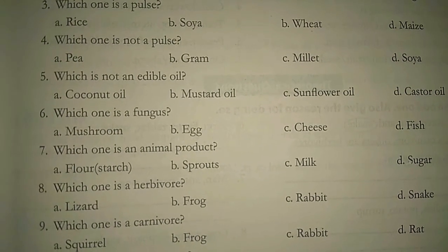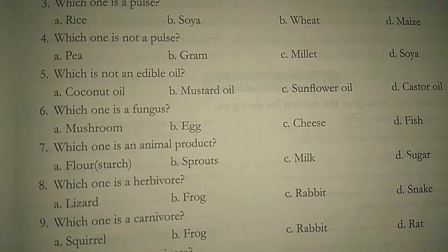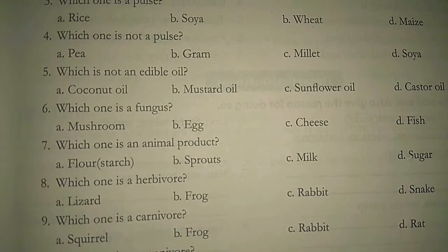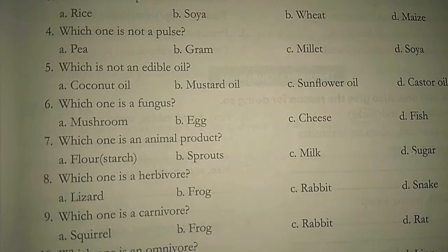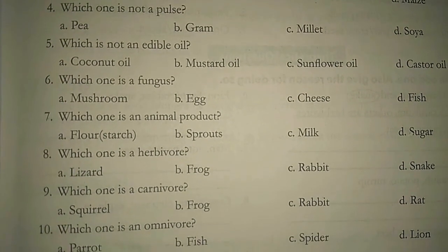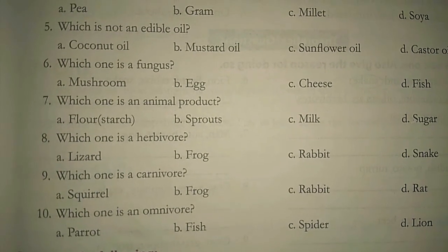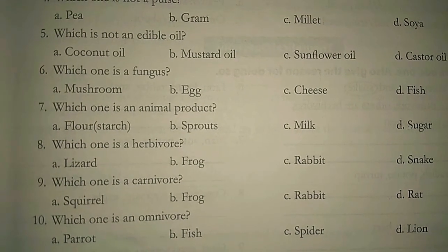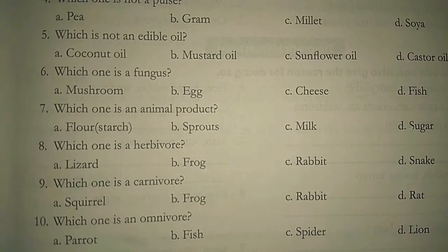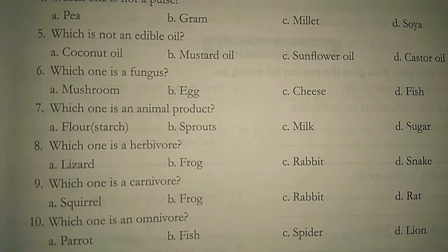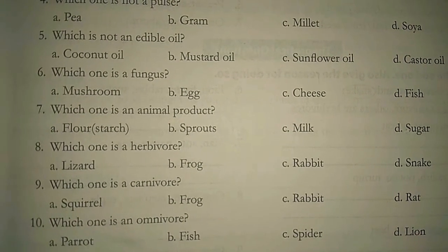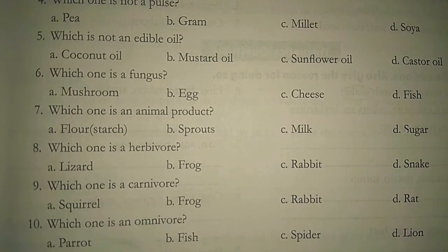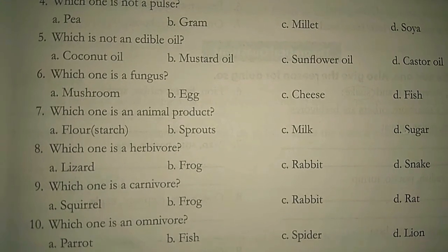Question number eight: which one is a herbivore? Options are lizard, frog, rabbit, and snake. Question number nine: which one is a carnivore? Options are squirrel, frog, rabbit, and rat. Question number ten: which one is an omnivore? Options are parrot, fish, spider, and lion.